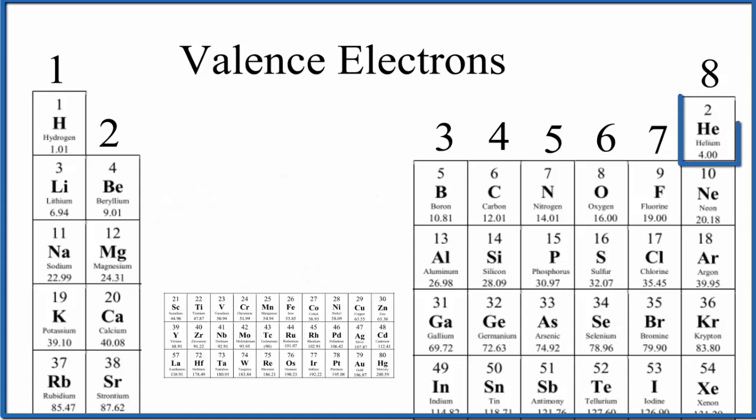The only exception is helium. Helium's atomic number is two, it only has two protons, it only has two electrons. So helium here has two electrons in its outer shell, even though it's in group 18.